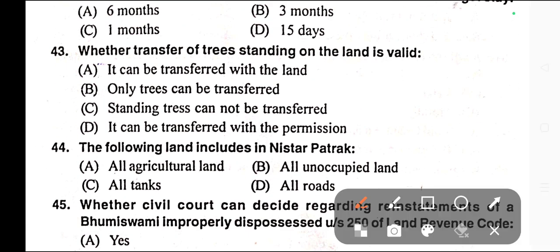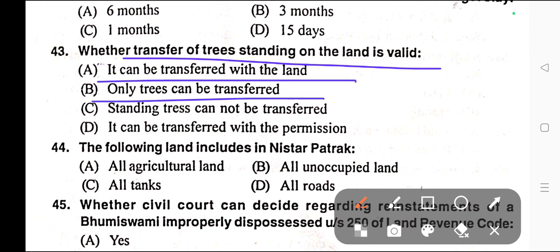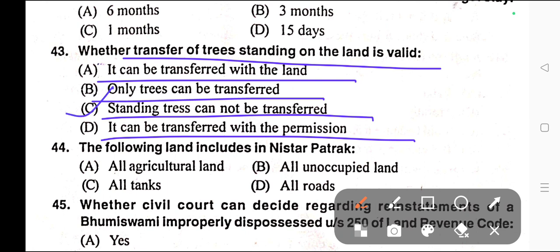Question number forty-three: Whether transfer of trees standing on land is valid. Options: A) It can be transferred with the land, B) Only trees can be transferred, C) Standing trees cannot be transferred, D) It can be transferred with permission. Correct answer is option C — standing trees cannot be transferred. Section 180 of the Chhattisgarh Land Revenue Code.